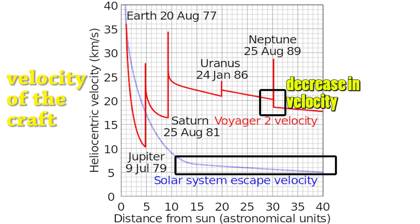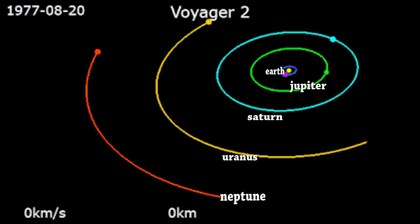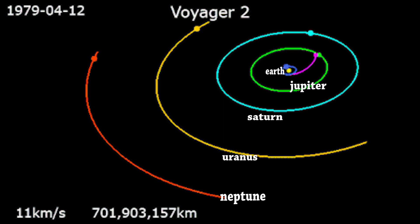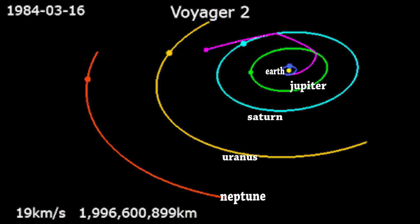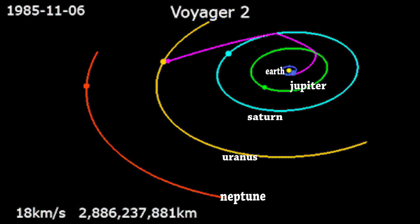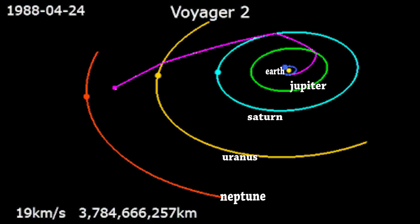It didn't matter that Neptune slowed Voyager down, because by then the spacecraft had received velocities well over the escape velocity of the solar system. You can clearly see this in the graph showing the escape velocity line versus Voyager's actual velocity. This is essentially how our mission will proceed — scientists at NASA calculated thousands of different trajectories before picking the one that Voyager took.